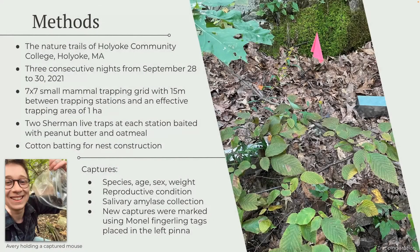This study occurred in the nature trails behind Holyoke Community College in Holyoke, Massachusetts, for three consecutive nights from September 28th to 30th in 2021. We used a 7x7 small mammal trapping grid with two live traps at each station that were baited with peanut butter and oatmeal and some cotton batting in case the mice became cold overnight.